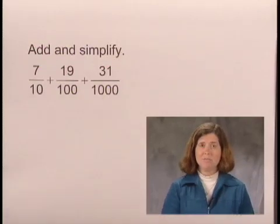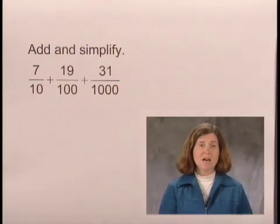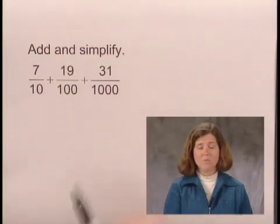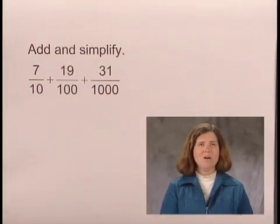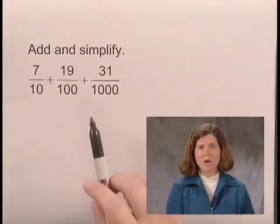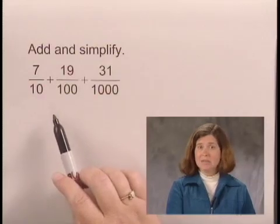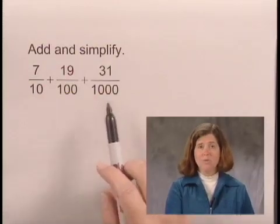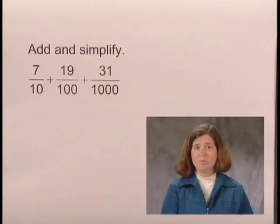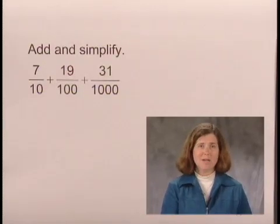They are not the same number, so we need to find the least common multiple of 10, 100, and 1,000. Before we start any procedure for finding a least common multiple, let's look at the numbers and see if the largest number, 1,000, is a multiple of the other two numbers. It is, so we know right from the beginning that 1,000 is the least common multiple.